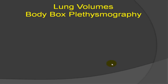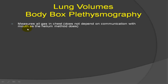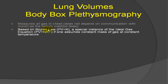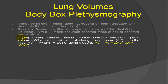Body box plethysmography is a completely different principle to measure the same type of total lung capacity. This test measures all of the gas in the chest and does not depend on communicating with the mouth, because we're not using helium and not depending on dilution. The principle is based on Boyle's law of gases — pressure times volume is a constant as long as the amount of gas and temperature is constant. Boyle's law is a corollary of the ideal gas equation PV equals NRT when amount and temperature are constant. The technician has the patient do a panting maneuver inside a sealed box, moving their lung volumes a small amount called delta V.